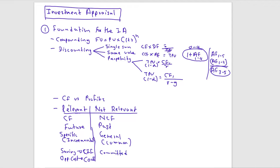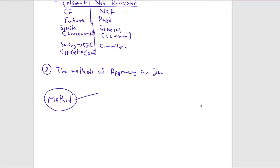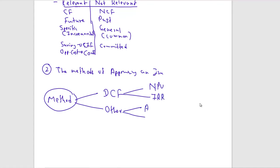The second major area is the methods of appraising an investment. There are four key methods: two are discounted cash flow methods — NPV and IRR — and the other two are ARR (accounting rate of return, also called ROCE) and payback period.